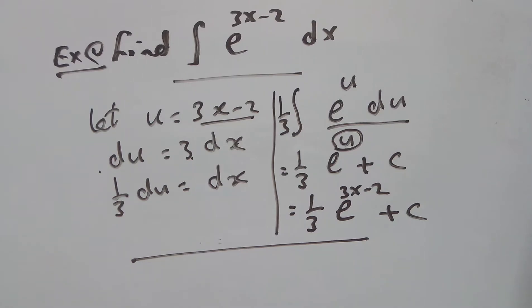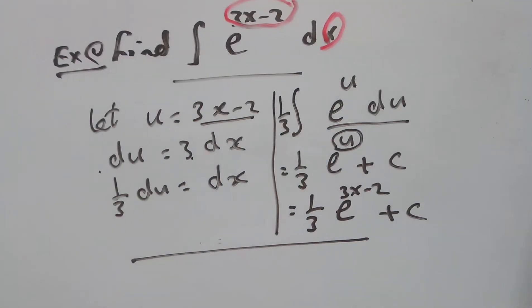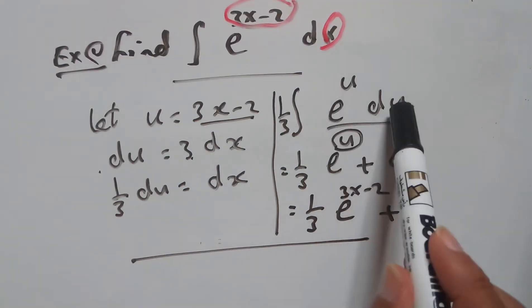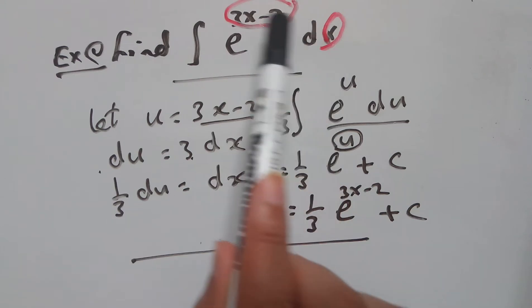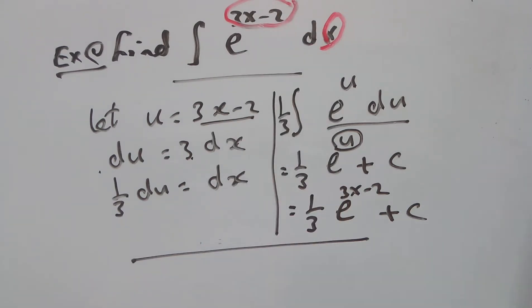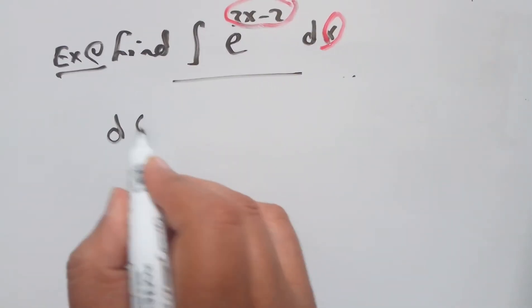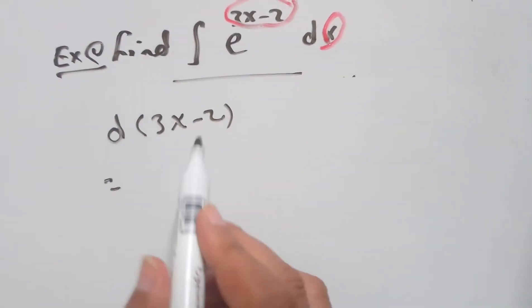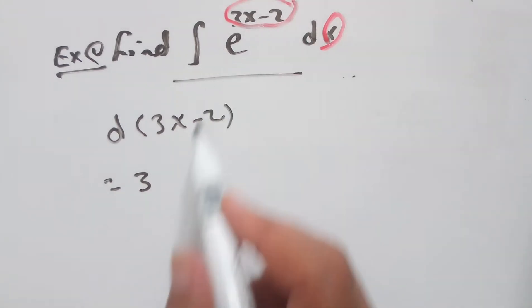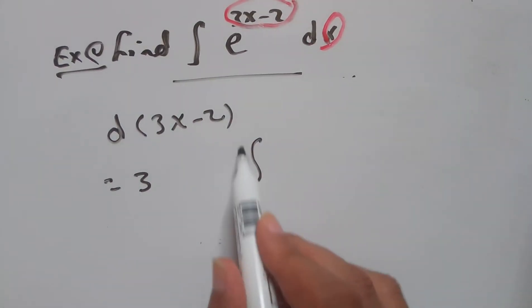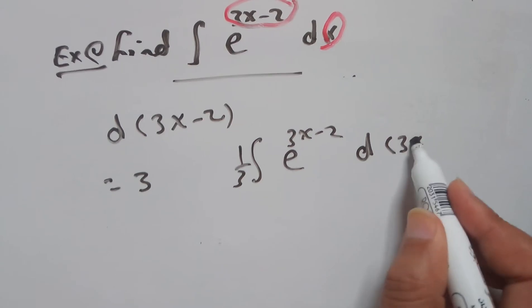Alternatively, looking at this directly: the exponent here is 3x minus 2, which is not just x. To apply the rule for e to the power u du, these values must be the same — 3x minus 2. What is the derivative of 3x minus 2? It is 3. So you must divide by 3 here, giving one-third times e to the power 3x minus 2, times d(3x minus 2).